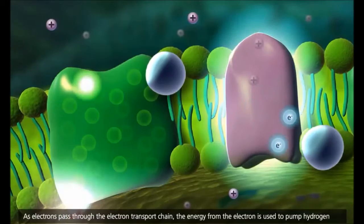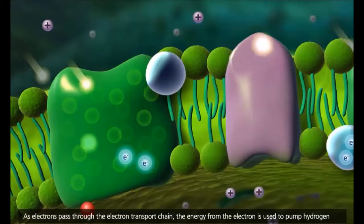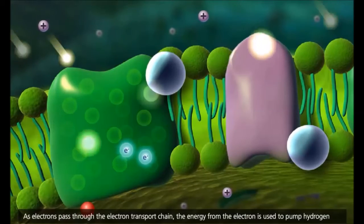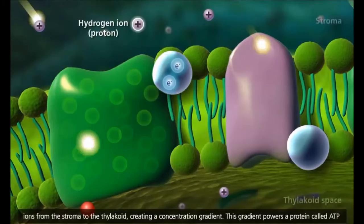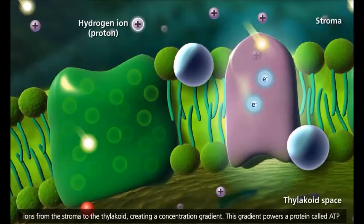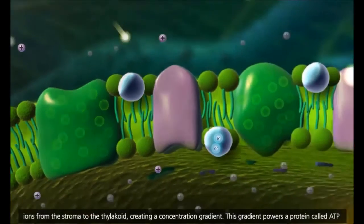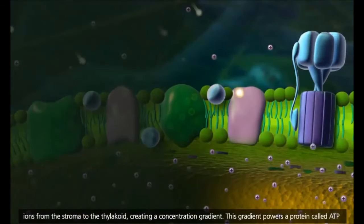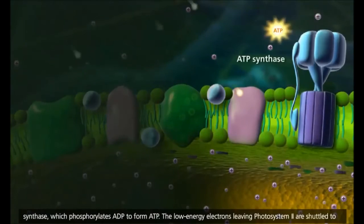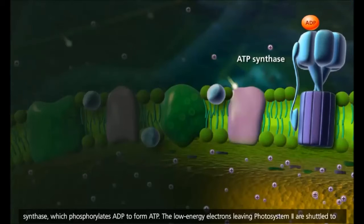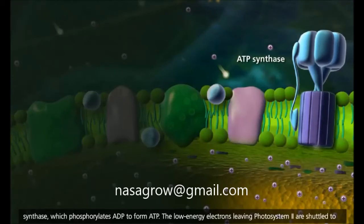As electrons pass through the electron-transport chain, the energy from the electron is used to pump hydrogen ions from the stroma to the thylakoid, creating a concentration gradient. This gradient powers a protein called ATP synthase, which phosphorylates ADP to form ATP.